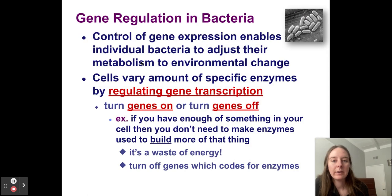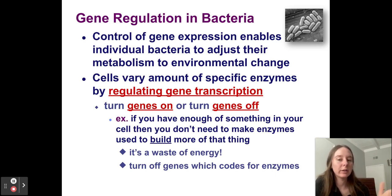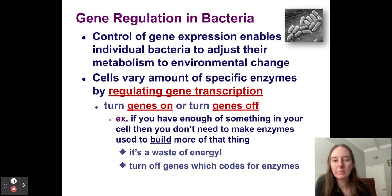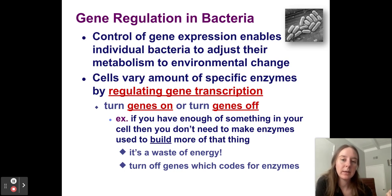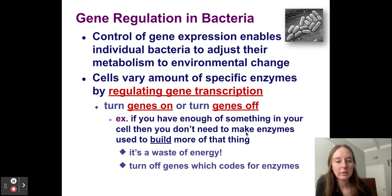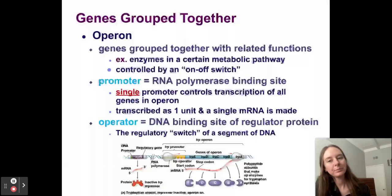Here's a summary: we control gene expression in bacteria so they can adjust their metabolism to environmental change. They either build more enzymes or stop building enzymes. They vary the amount of specific enzymes by regulating gene transcription. You have that piece of DNA to build an enzyme, but we're not even going to transcribe it — we make no mRNA. By this, we're turning genes on or turning genes off. Let's turn off genes that code for enzymes if we don't need to build or break down a product.